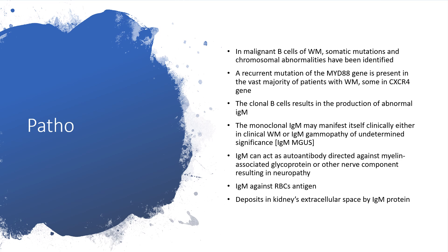The pathophysiology is essentially that in malignant B-cells of Waldenström's macroglobulinemia, somatic mutations and chromosomal abnormalities have been identified. A recurring mutation can occur in a gene called MYD88, and that will occur in the vast majority of people with Waldenström's macroglobulinemia. Some will have a mutation in the CXCR4 gene. The clonal B-cells result in the production of abnormal immunoglobulin M.